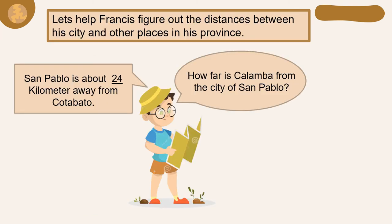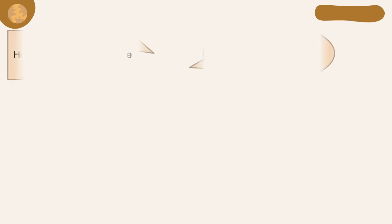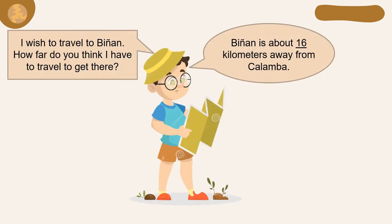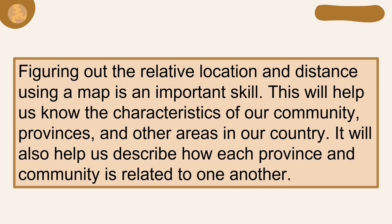Francis figured out the distances between his city and other places in his province. San Pablo is about 24 kilometers away from Calamba. If you wish to travel to Biñan, it is about 16 kilometers away from Calamba. Sharing the relative location and distance using a map is an important skill. This will help us know the characteristics of our community, provinces, and other areas in our country.